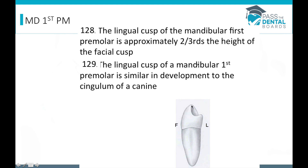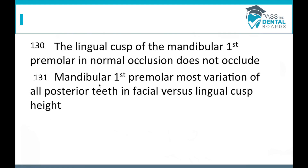If you look at this tooth and draw a line from the buccal cusp over to the lingual cusp, imagining it as a canine, the lingual cusp would look very similar to what the cingulum would be on a canine. In normal occlusion, the lingual cusp of the mandibular first premolar does not occlude with anything above it. The mandibular first premolar also has the most variation of all posterior teeth in facial versus lingual cusp height.